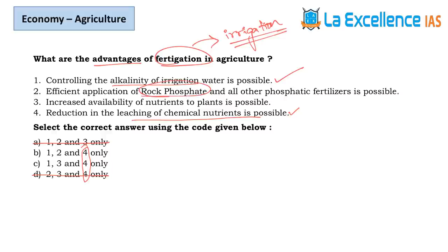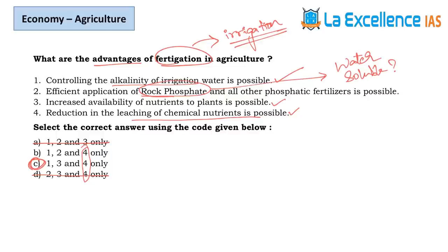Statement 2 — efficient application of rock phosphate and other phosphatic fertilizers is possible. Remember, fertigation means inserting water-soluble fertilizers. Is rock phosphate water-soluble? Statement 3 — increased availability of nutrients to plants is possible. Yes, when we apply fertilizers directly at the roots, nutrient availability increases. So statement 3 is correct, answer is C. Rock phosphate is not water-soluble, so statement 2 is wrong.